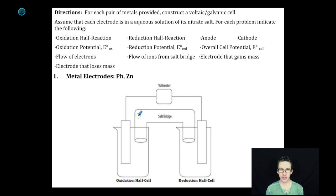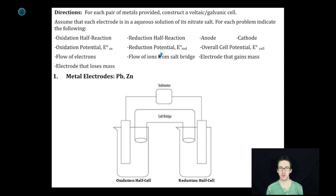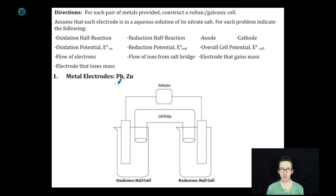Hey, what's up my chemistry people? We are going to, for each pair of metals provided, construct a voltaic cell. And then we've got a bunch of labeling to do. As we take a look at problem number one, we are provided with lead and zinc as our two metal electrodes.